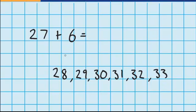And let's just check that I did move up six numbers. One, two, three, four, five, six. Perfect. So 27 plus six equals 33.